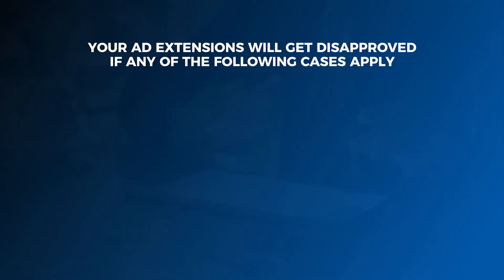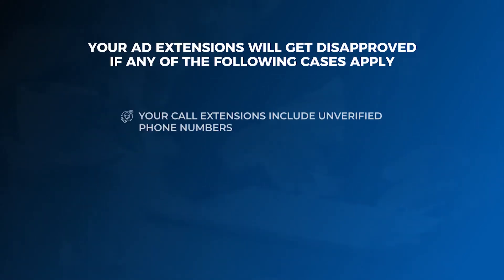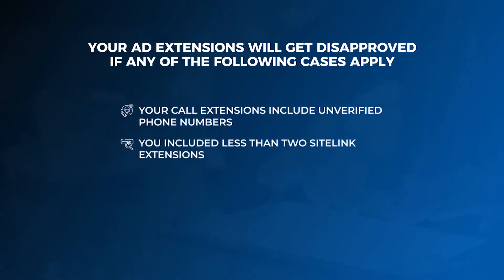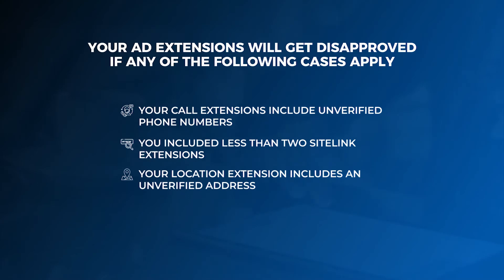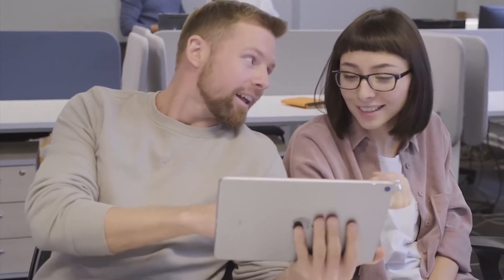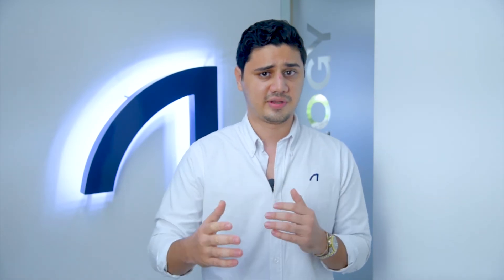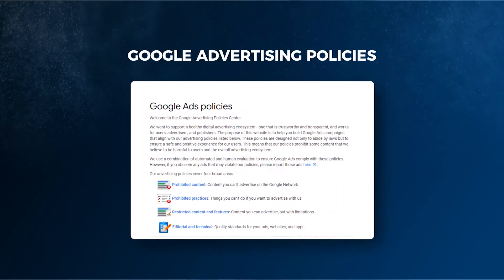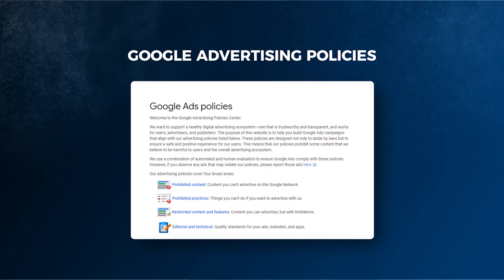Your ad extensions will get disapproved if any of the following apply: your call extensions include unverified phone numbers, you included less than two sitelink extensions, or your location extensions include an unverified address. In general, your marketing team should be familiar with Google Ads extension policy. Keep in mind that you can always request a review if you believe your ad was disapproved incorrectly. Before submitting a review, go over the exceptions listed in the Google Advertising policy.